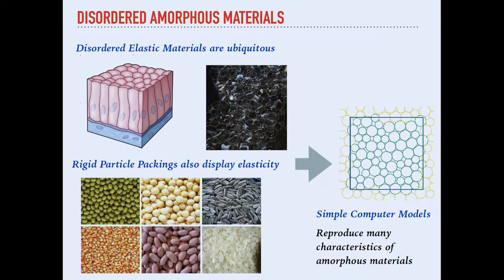Before going into that, I'll give a brief introduction of what kind of materials I'm talking about. I'm measuring such correlations in simplified models, but the materials we are trying to model are disordered amorphous materials, which are ubiquitous. I'm showing different kinds of materials that can be described with simple computer models: cellular epithelial tissues, foams, and rigid particle packings that also display elasticity at large length scales.